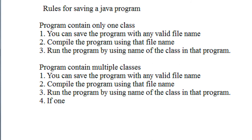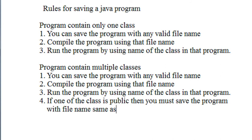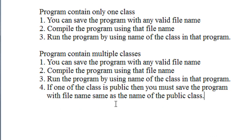Here is the second rule. If one of the classes is public, then you must save the program with the file name same as the name of the public class. That is the rule for saving a program containing multiple classes.